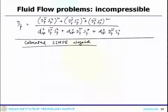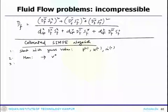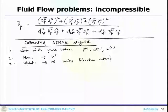So, what it says: you start with guess values which is P_n, u_n, m-dot_n. Then solve the momentum equation to get V-star. Then update the m-dot using Rhie-Chow interpolation and compute the momentum satisfying mass field.